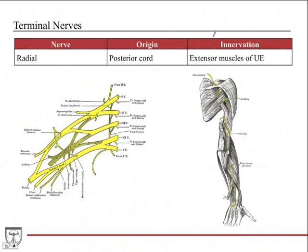The radial nerve is responsible for all the extensor muscles of the arm and forearm. It comes off the posterior cord, exits near the triceps, wraps around the humerus giving off branches, comes through the elbow, and then travels through the posterior compartment of the forearm, innervating the extensor muscles of the wrist and fingers.